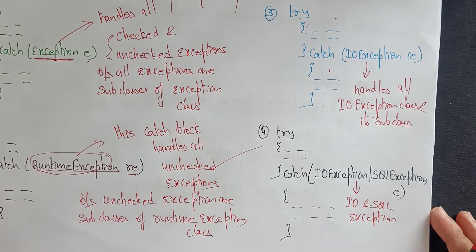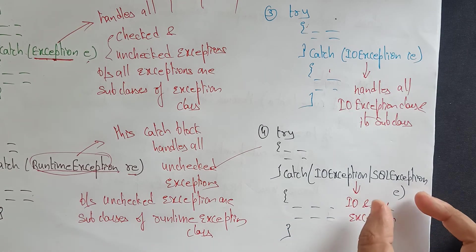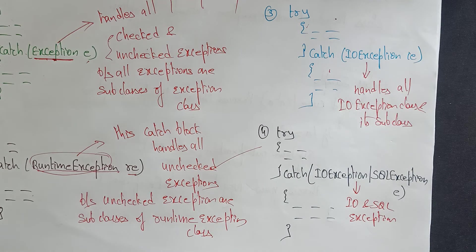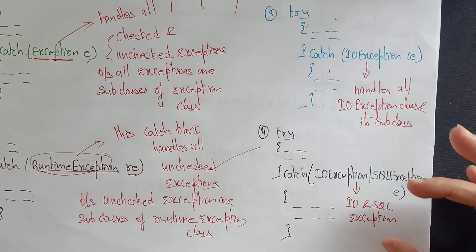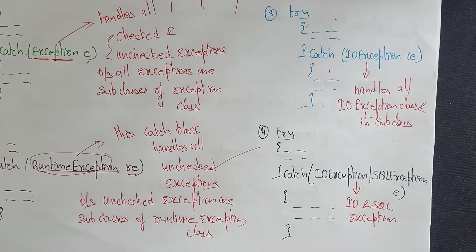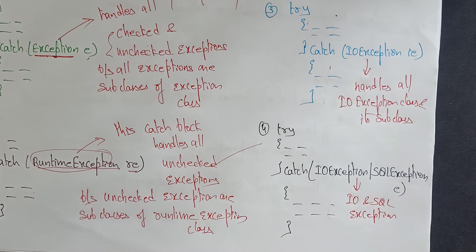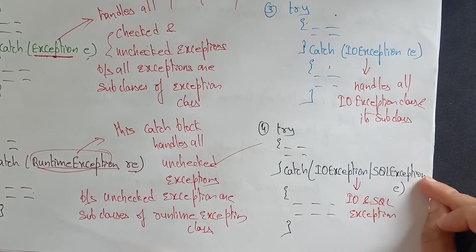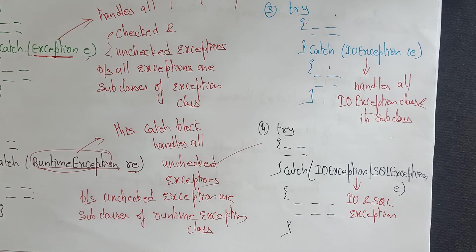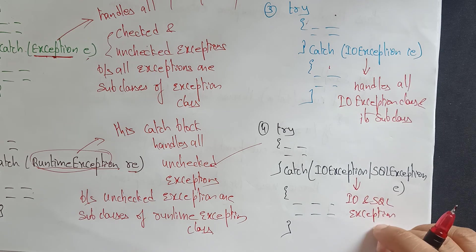Whenever an input/output exception occurs, this catch block handles it and is going to generate a user-friendly message. SQLException handles any exceptions related to database queries — for example, if you write a mistake in a query, if the table is not present, not accessible, or permissions are not there — everything will be caught by this catch block. It will handle both IOException and SQLException and their subclasses.